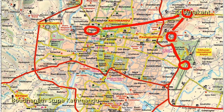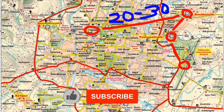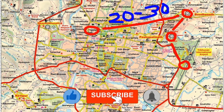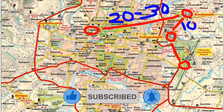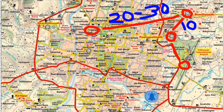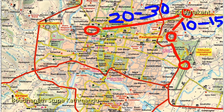If you are going from Thamel to Boudhanath in a local bus or shared vehicle, it may cost about 20 to 30 Nepali rupees and may take about half an hour. If you are going from Pashupatinath to Boudhanath in a local bus or shared taxi, it may cost about 10 to 15 rupees and take about 10 minutes.